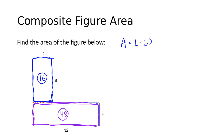Now, if I want the area of the entire figure, I just add those two together. I'll take the 16 and add it to the 48 and find that the total area of the figure is 64. We weren't given units, so we don't know if it's square yards, square feet, or square centimeters, but the area is 64.